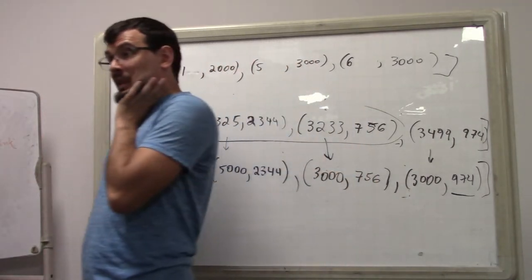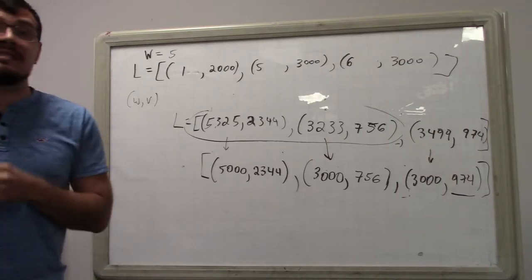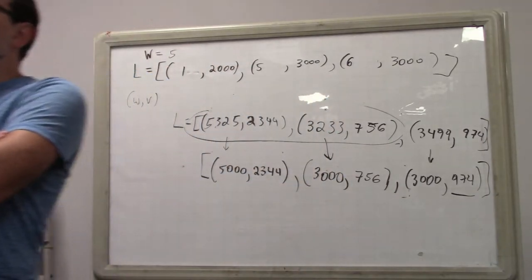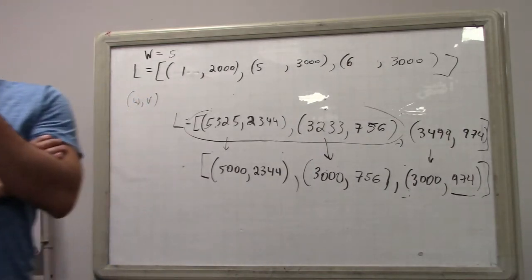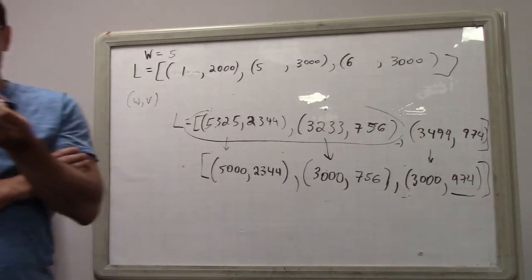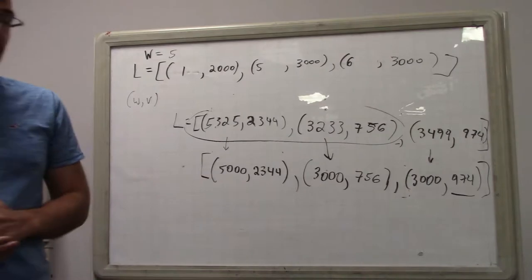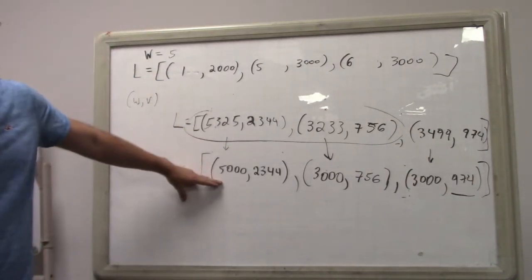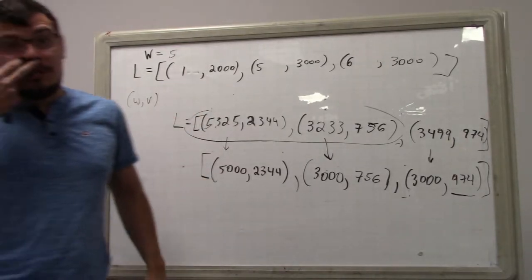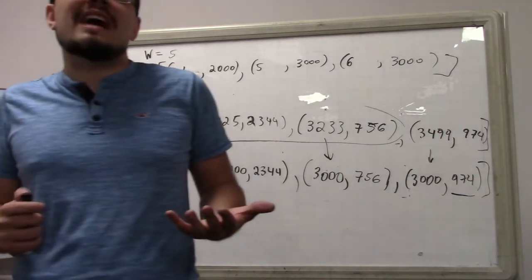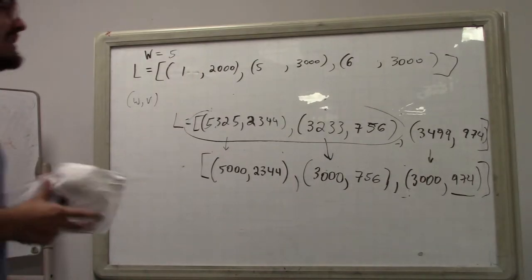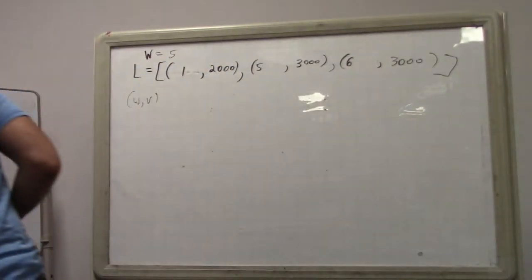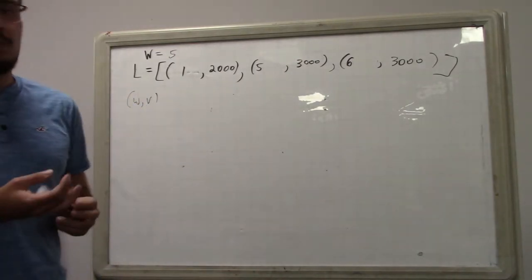How about rounding weights up? That passes a basic smell test: if a solution had low enough weights to be valid before, after rounding weights up that solution may stop being valid, but we'll never accept a solution that was actually invalid. If even after weights are increased the solution is still valid, then it was valid before. So rounding weights up will never produce an invalid solution. But there's another problem: it seems very difficult to guarantee any kind of performance bound on this algorithm.